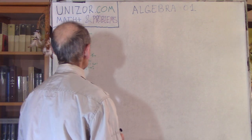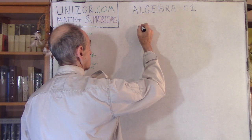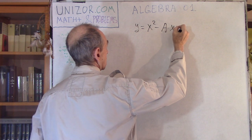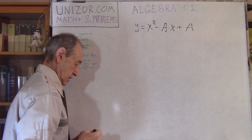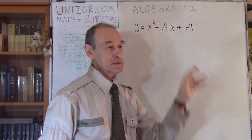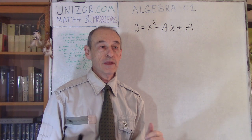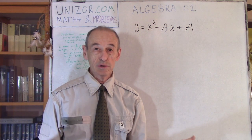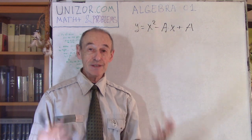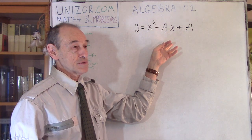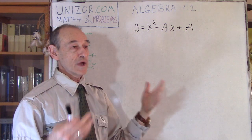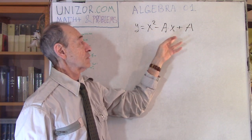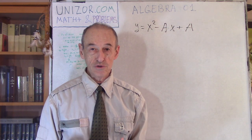So what's the problem? There is a function x squared minus a times x plus a, where a represents any real number. What does it mean that there is a function which depends on a, which can be any real number? Well, this equation actually defines a set of functions. For a equal to 0 it's one function: y equals x squared. For a equal to 1,000, it's another function: y equals x squared minus 1,000x plus 1,000. So this is a family of functions.